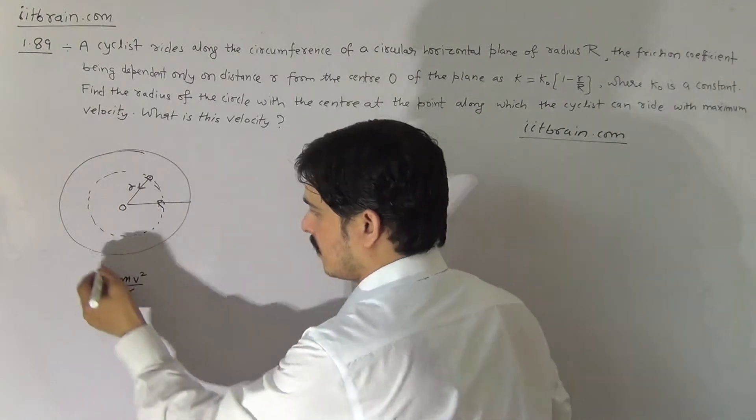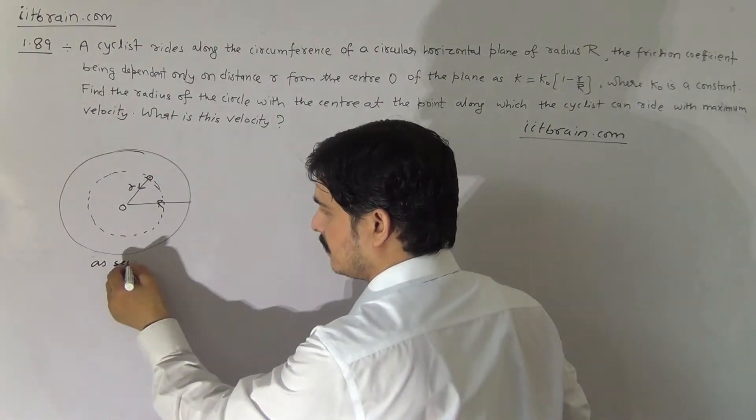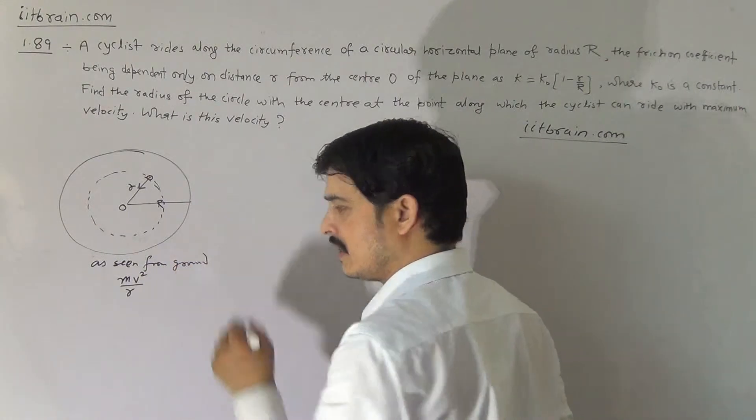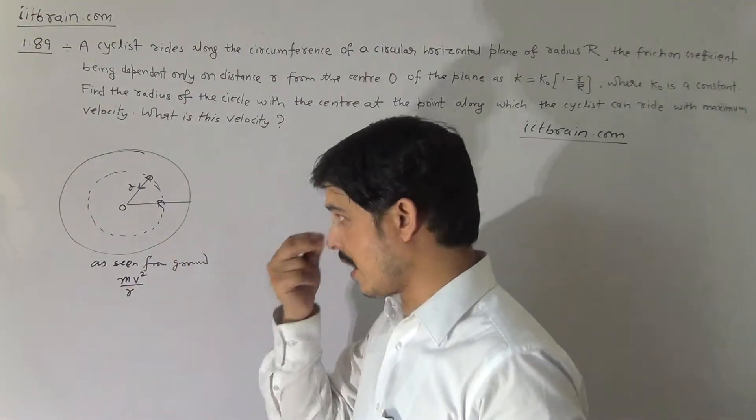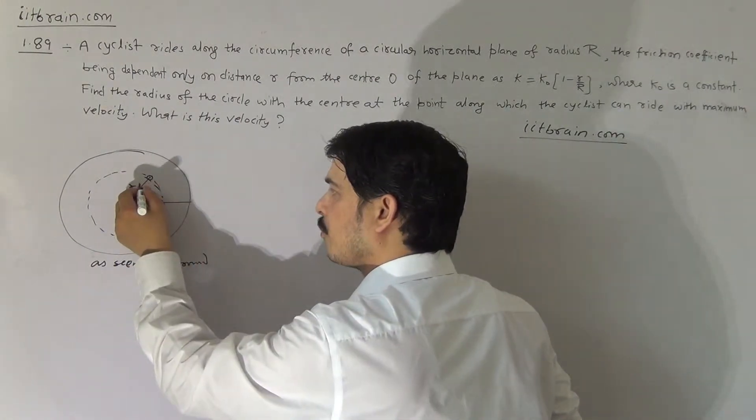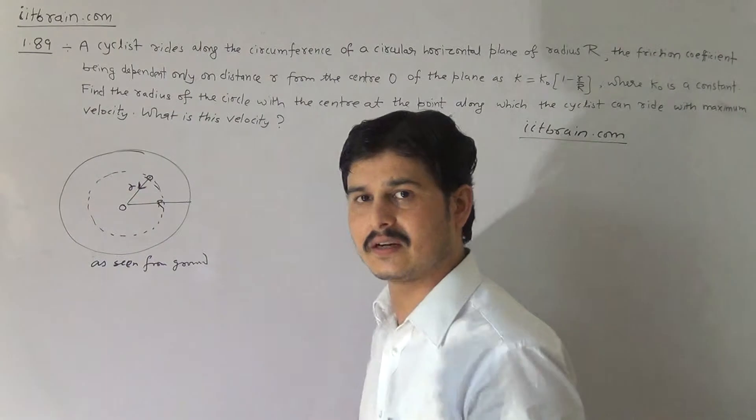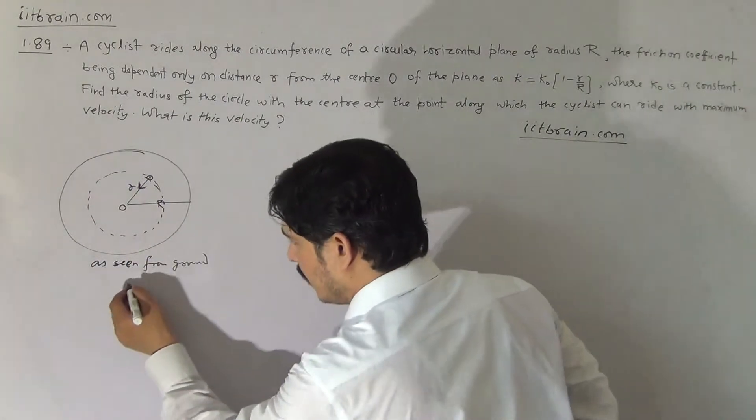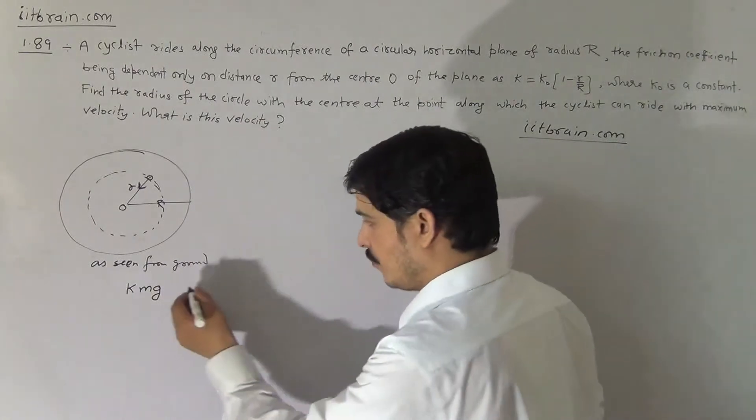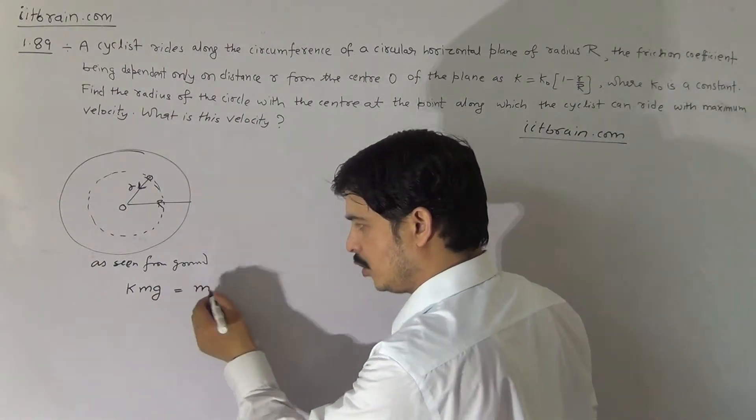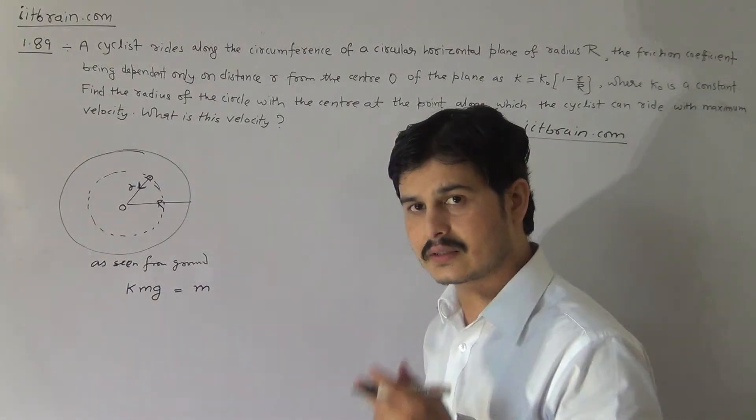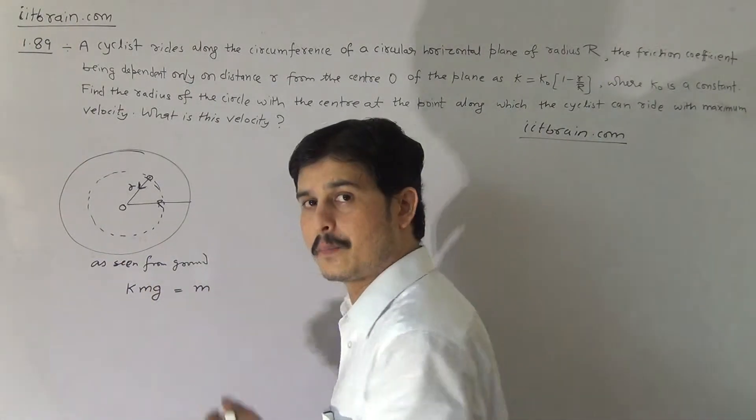As seen from ground, the necessary centripetal force required for the particle is mv square by r. Or you can also write: as seen from ground, the only force acting on the cyclist is friction towards the center. So the value of this friction, which is equal to kmg, will give m into a. According to Newton's law, force is equal to mass into acceleration. This kmg is the force of friction here.